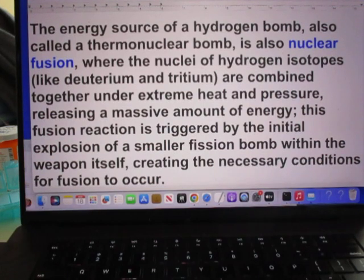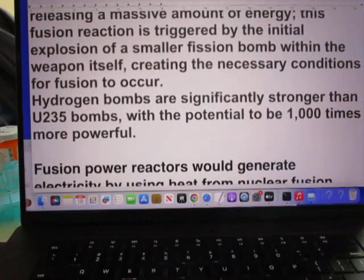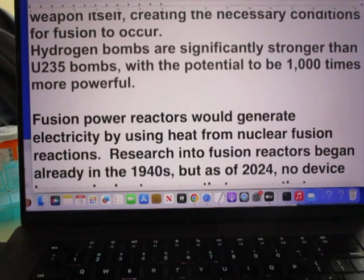The energy source of a hydrogen bomb, also called a thermonuclear bomb, is also nuclear fusion, where the nuclei of hydrogen isotopes like deuterium and tritium are combined together under extreme heat and pressure, releasing a massive amount of energy. This fusion reaction is triggered by the initial explosion of a smaller fission bomb within the weapon itself, creating the necessary conditions for fusion to occur. Hydrogen bombs are significantly stronger than uranium-235 bombs, with the potential to be about a thousand times more powerful.